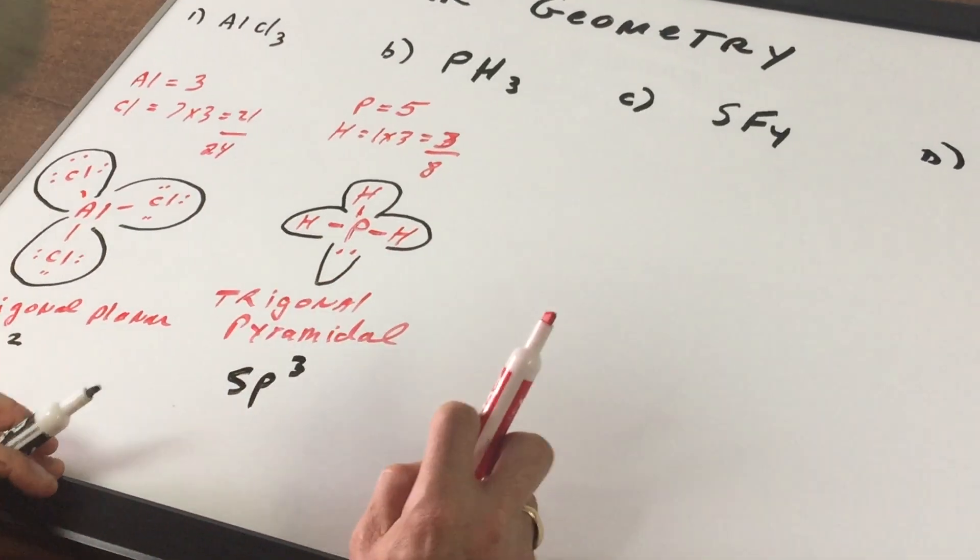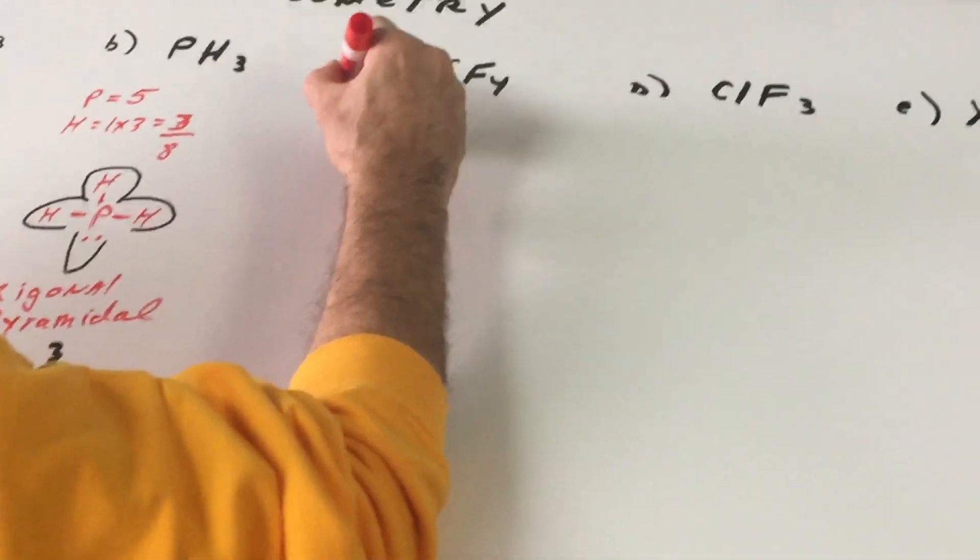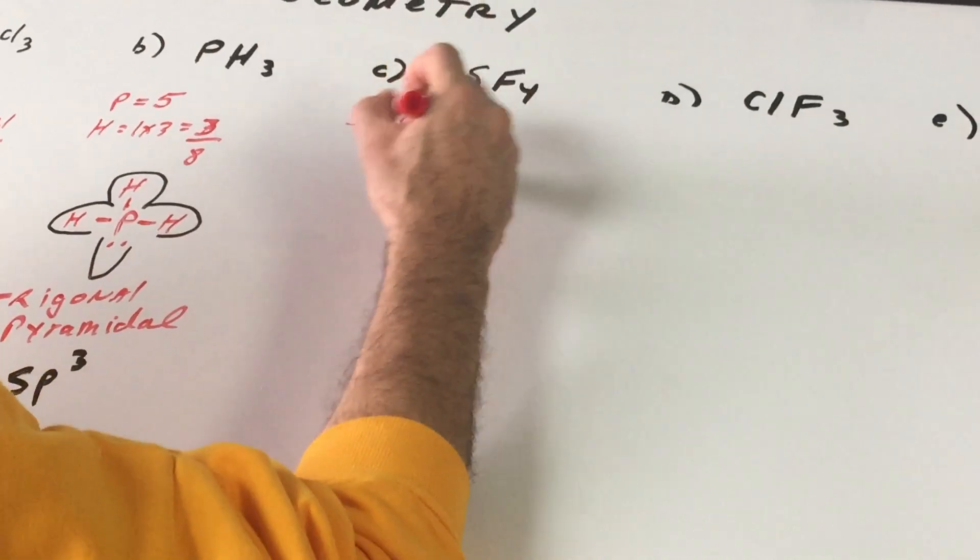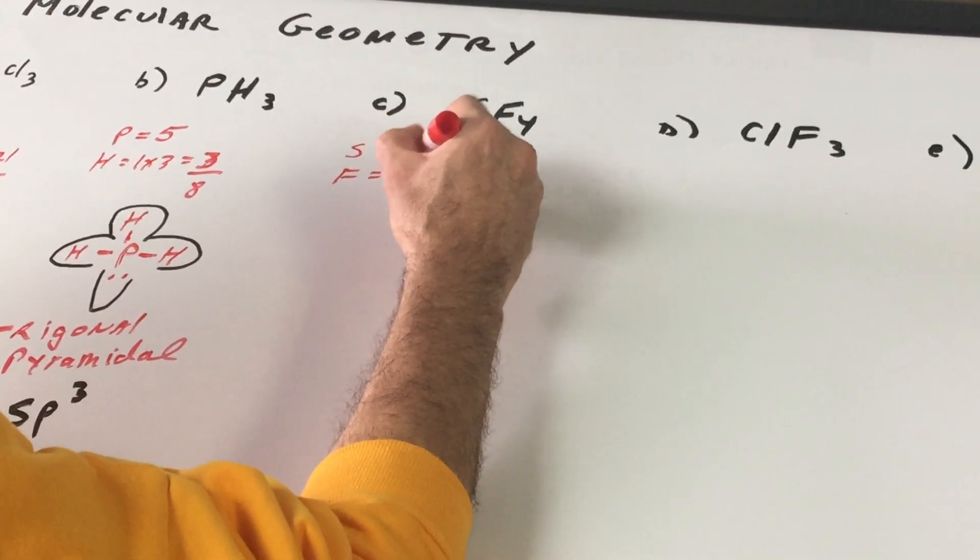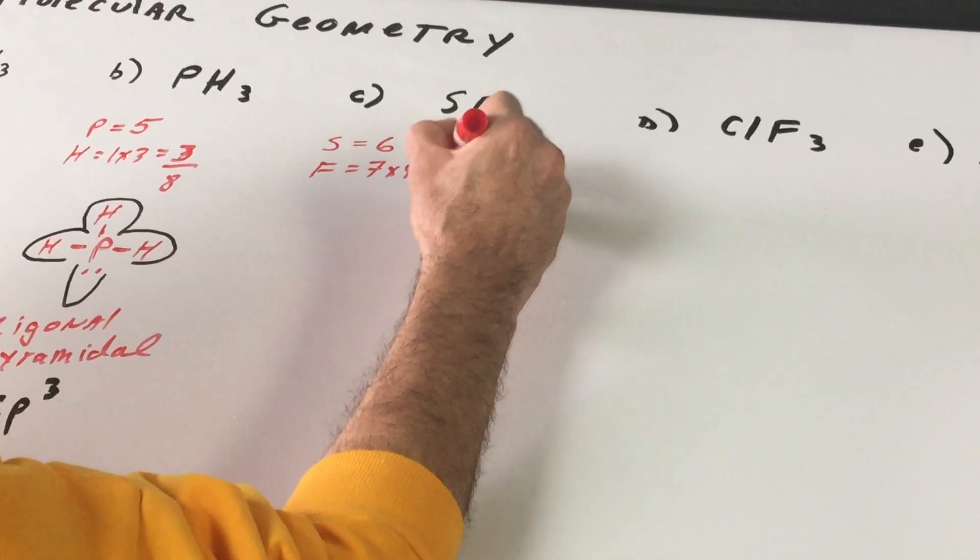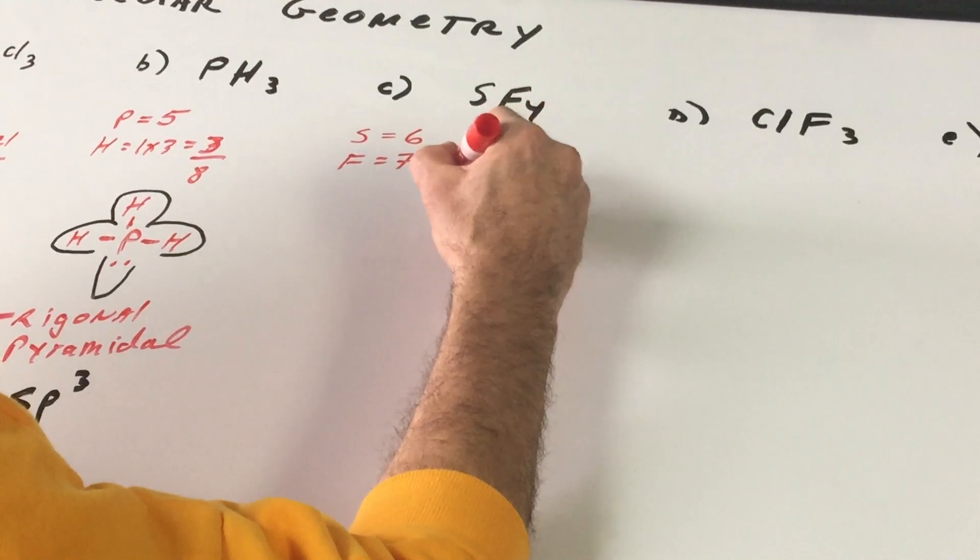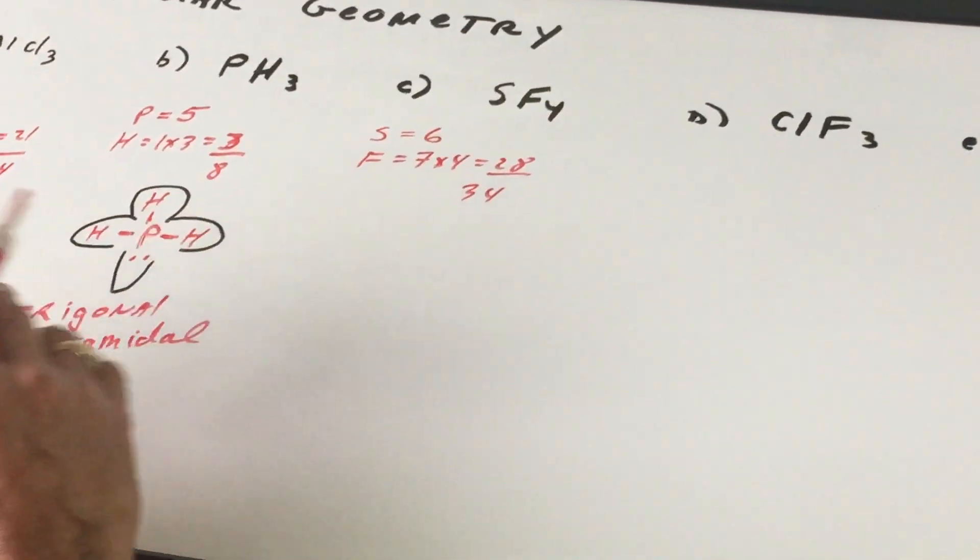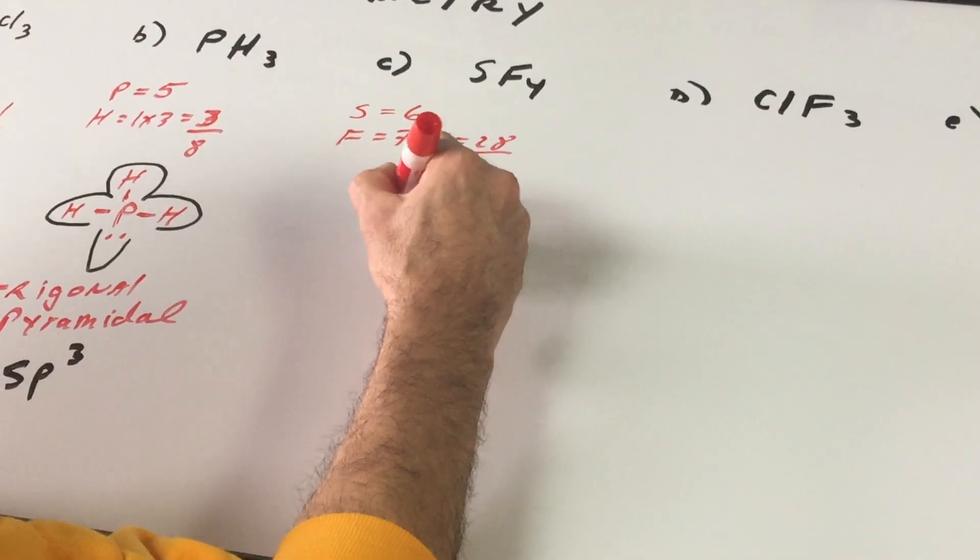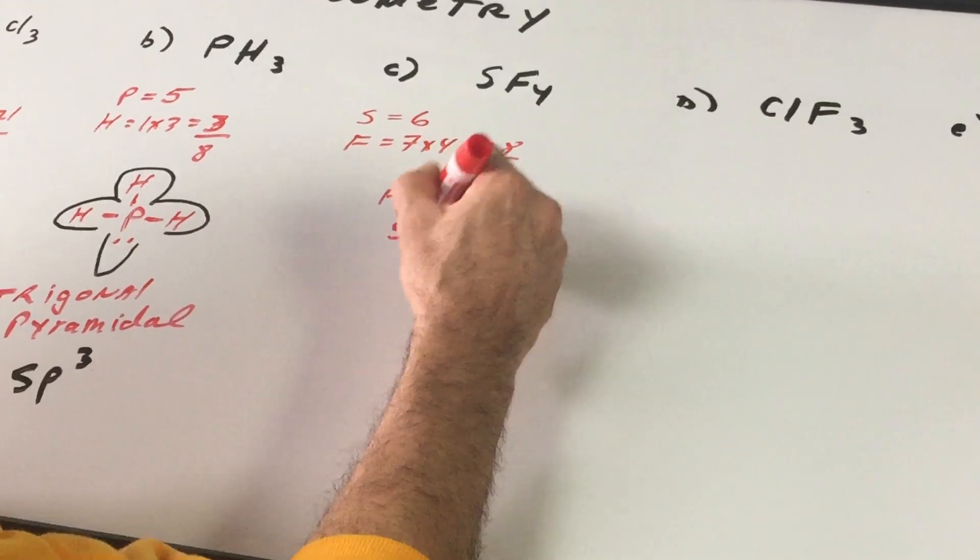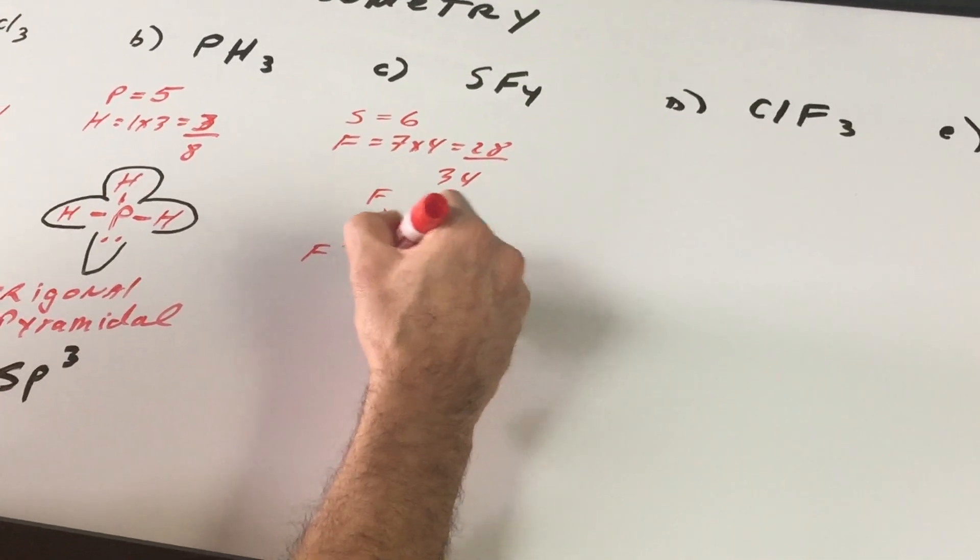The next one would be sulfur tetrafluoride. Sulfur being in group 16, we'll call it group 6. Fluorine is in group 17, we'll call it group 7. 7 times 4 is 28. And that gives me a total of 34 electrons. What I do is now I put the sulfur in the middle. I put these as far away as we can get them.